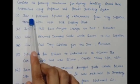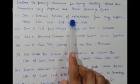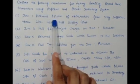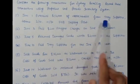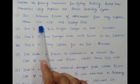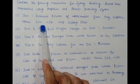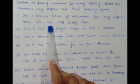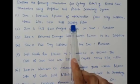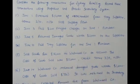It is given that on June 1st, merchandise worth $12,000 are purchased from CROI suppliers. Credit terms are 2/10, n/30, FOB shipping point.